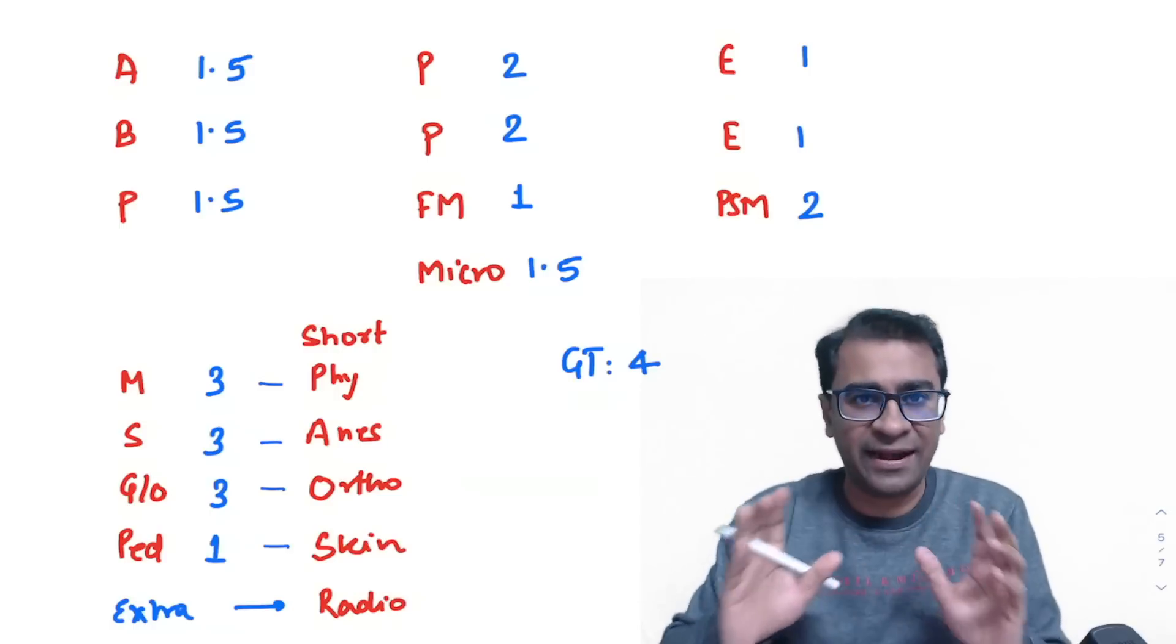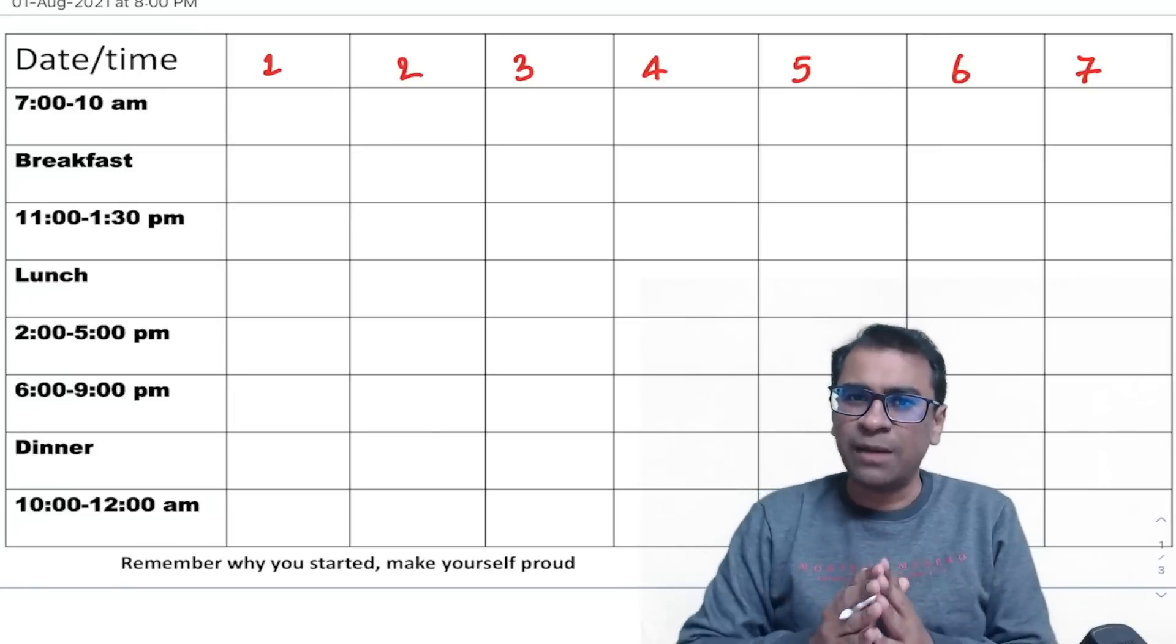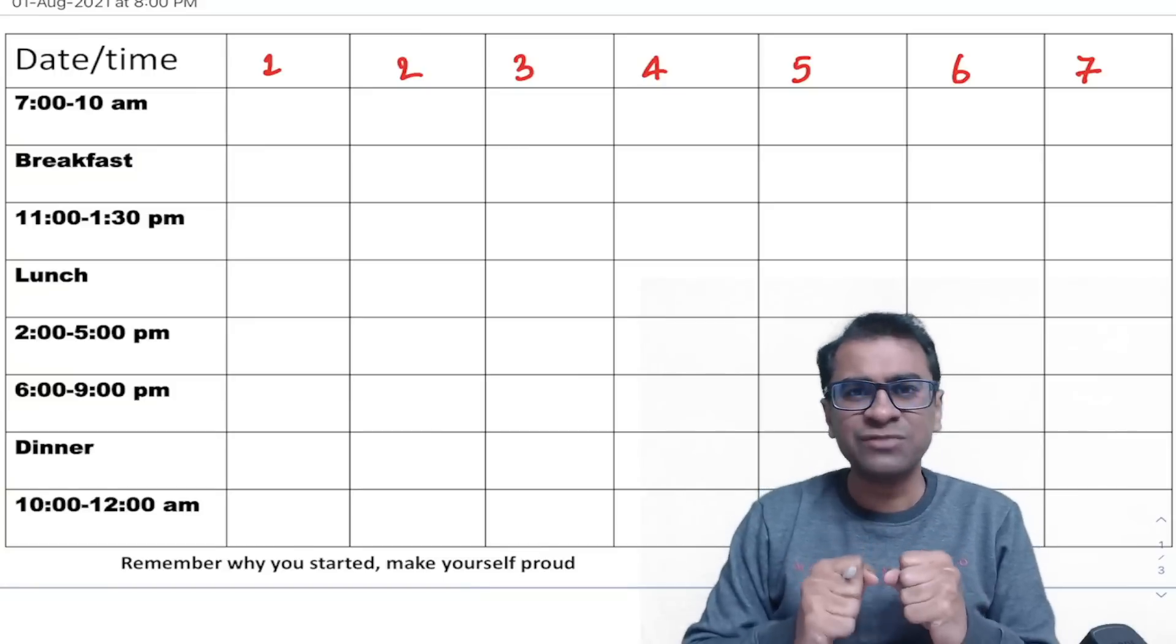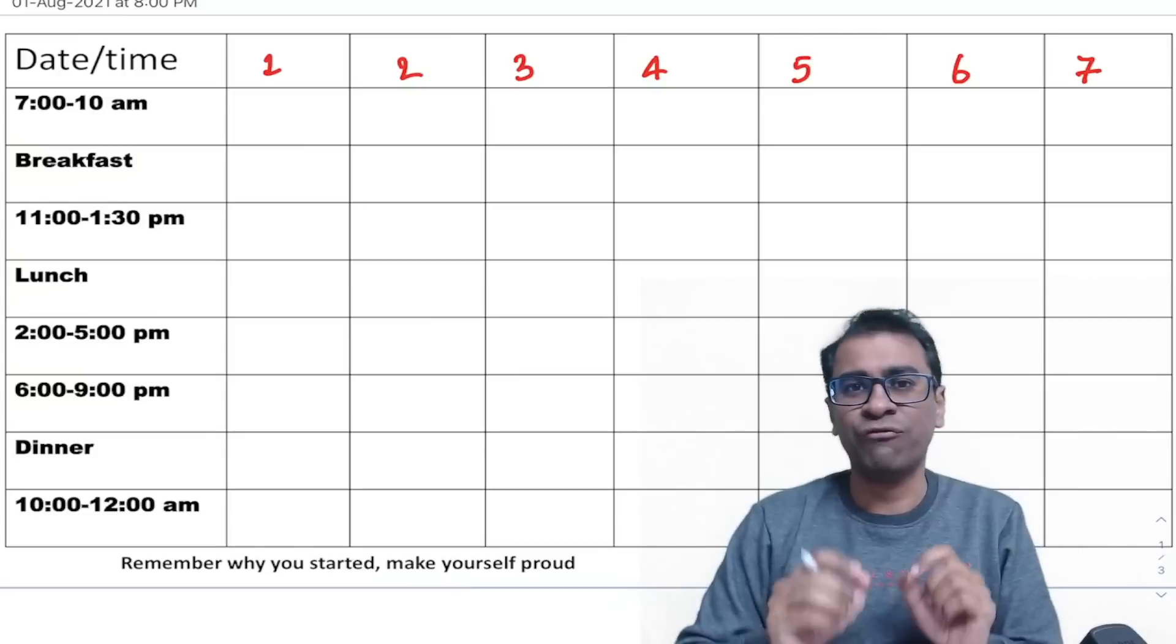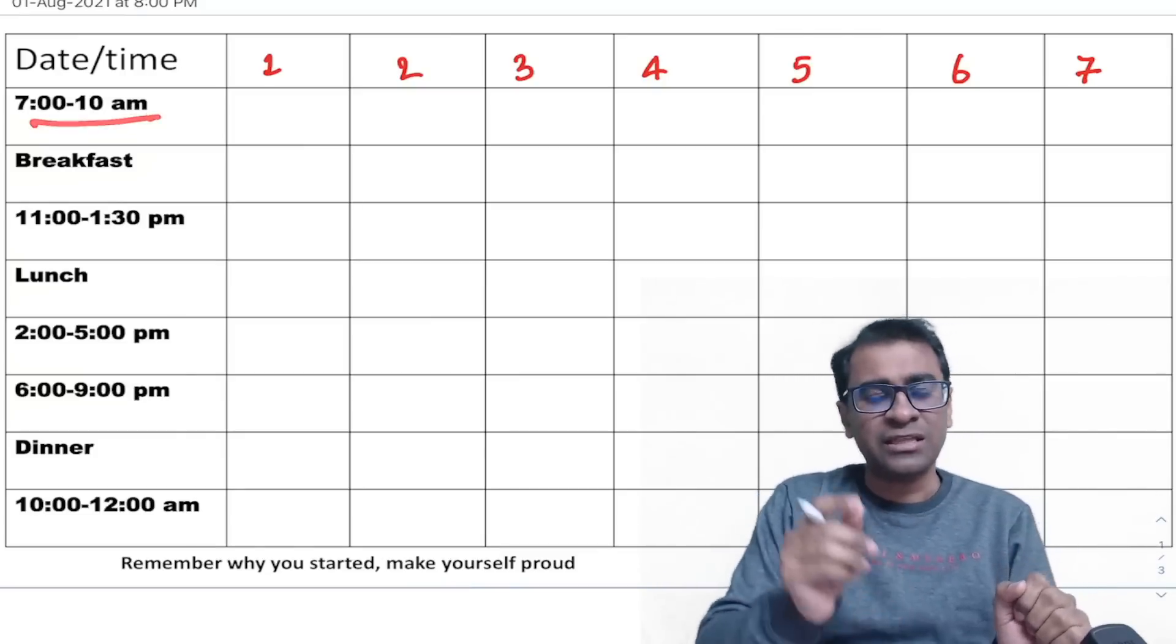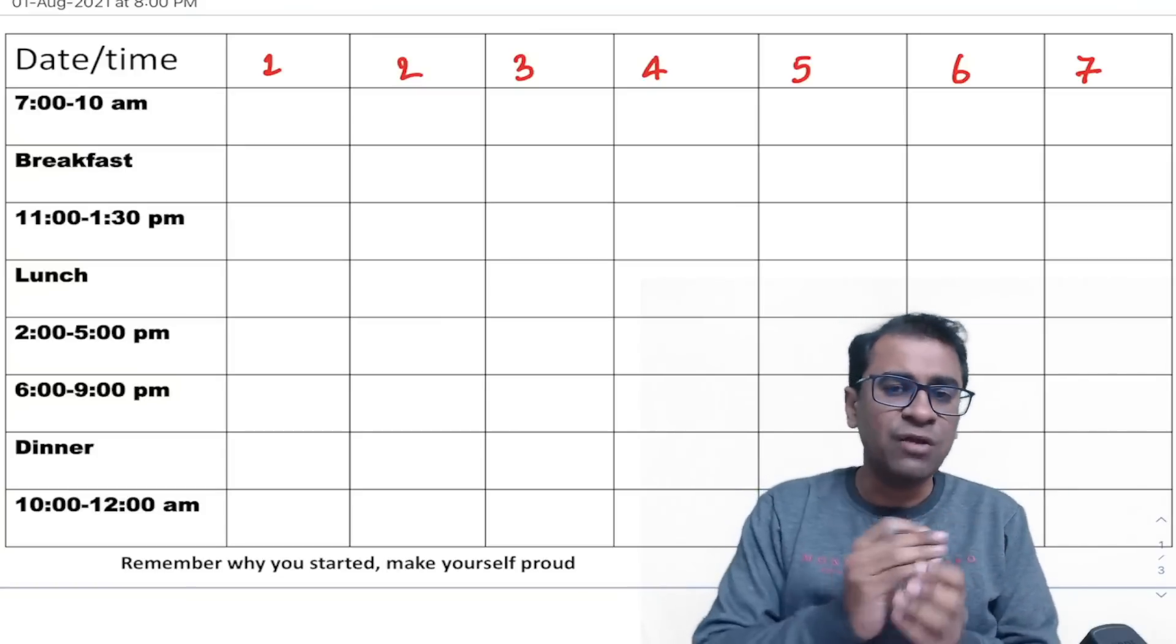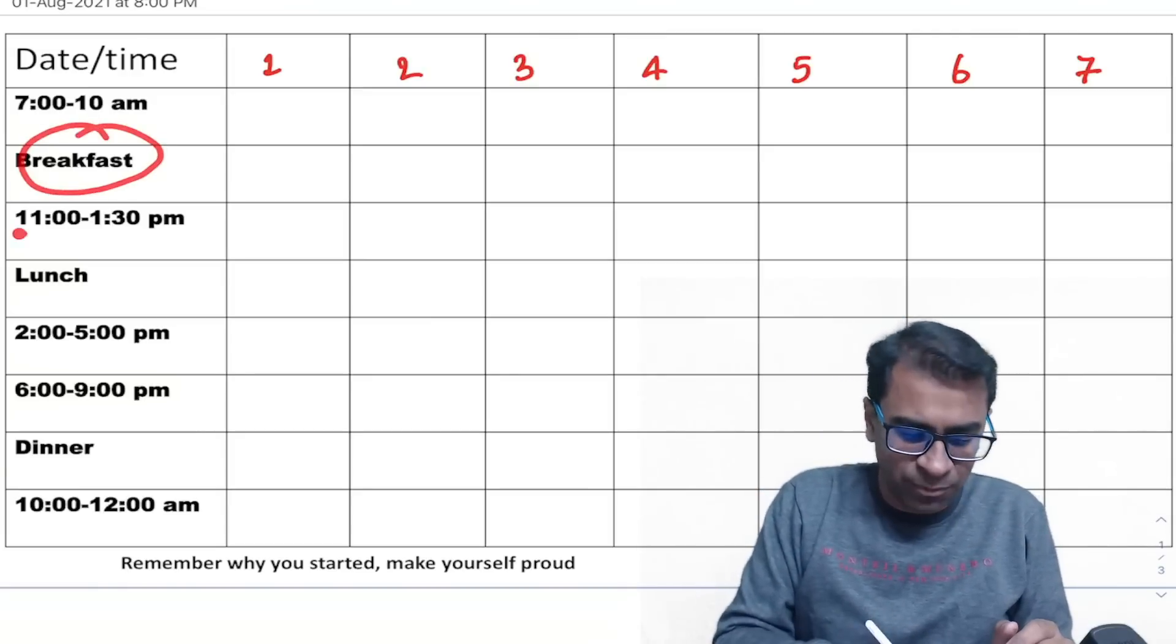I have anatomy, biochemistry, physiology, one and a half days each. Path and Pharma for two days. Forensic medicine for one day. And microbiology for one and a half days. Ophtha and ENT for one day. PSM you should give two days. Medicine, surgery, gynecops and pediatrics. So 3, 3, 3 and one day. And short subjects should be revised along with these in the evening time. So one day for extra. And along with that, you can also take up radiology.